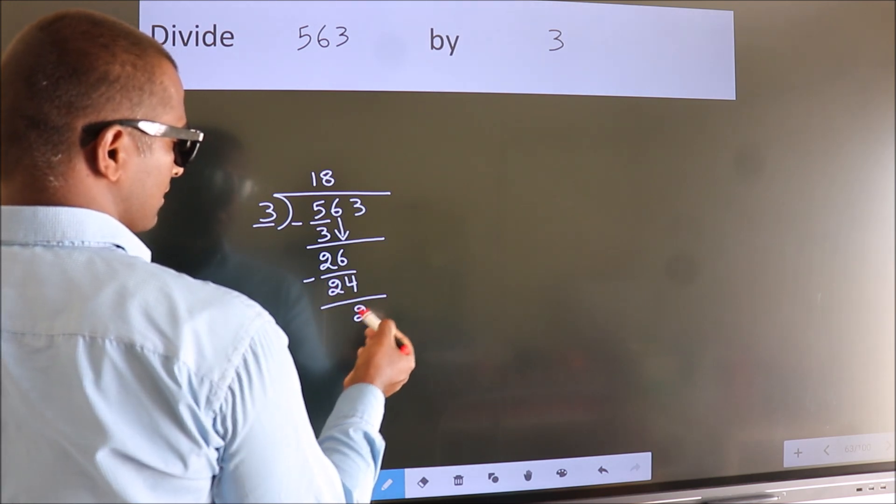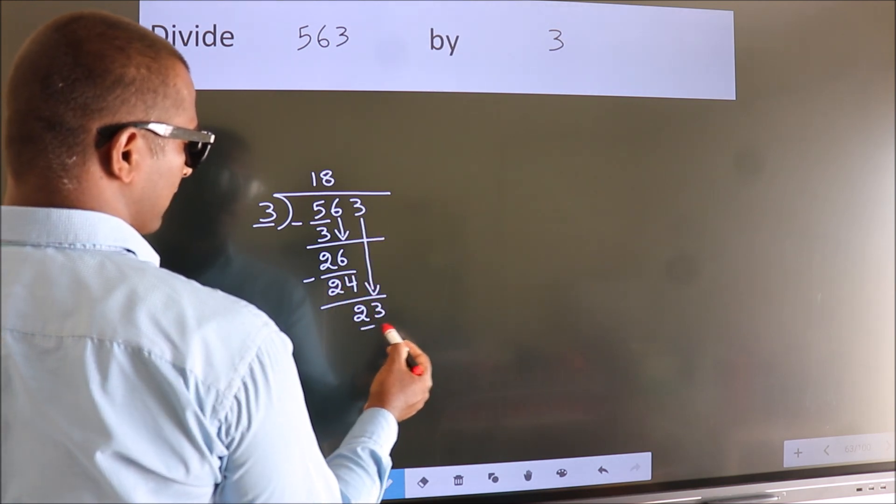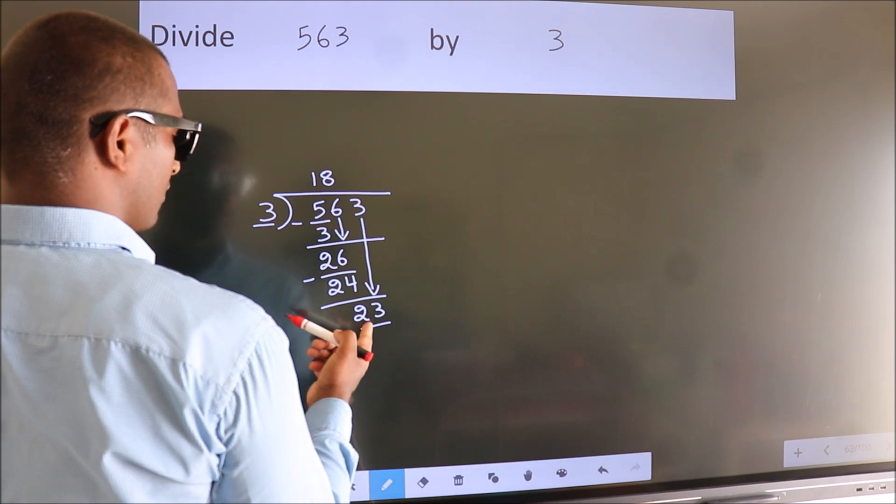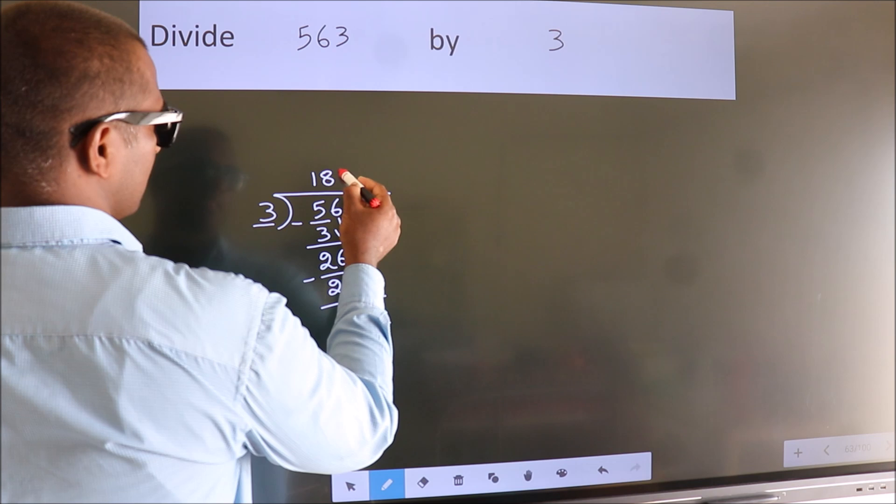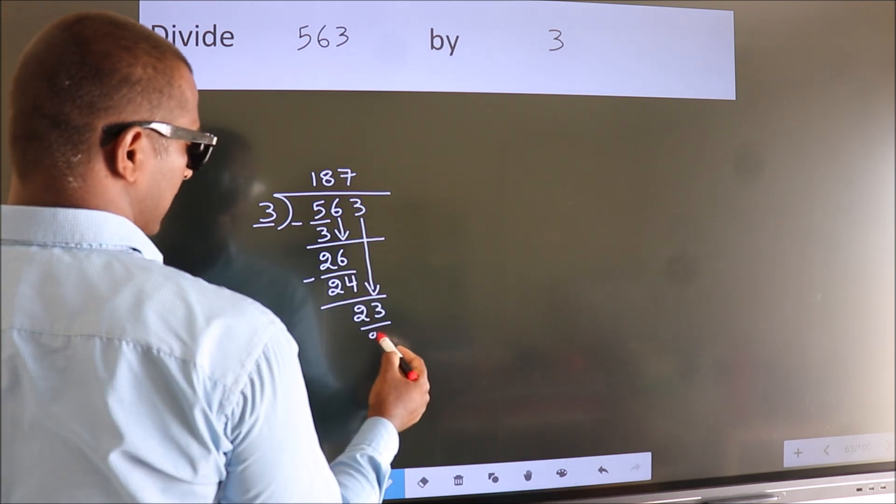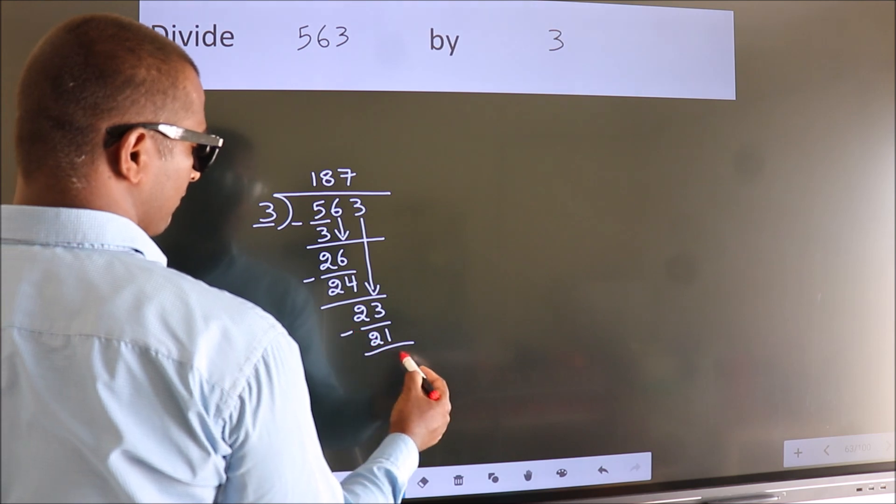After this, bring down the beside number. So, 3 down. So, 23. A number close to 23 in the 3 table is 3 times 7 is 21. Now, we subtract. We get 2.